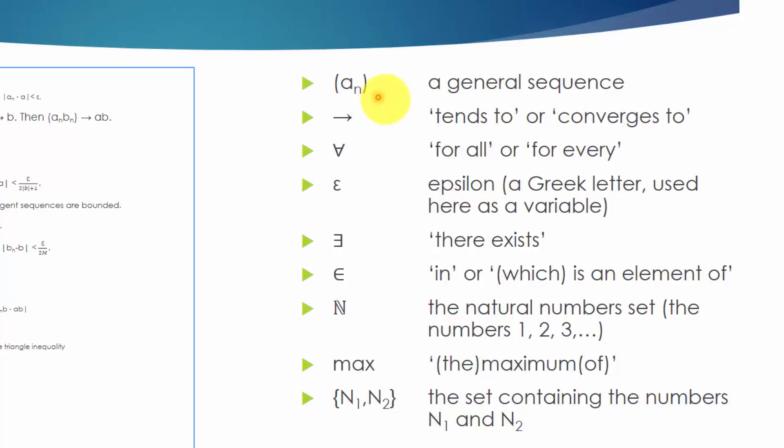An is a general sequence. The right arrow means tends to or converges to. This upside down A means for all or for every. This is a Greek letter epsilon. It is used as a variable. This reversed E means there exists or there is, there are.